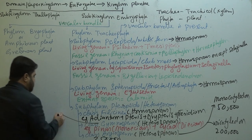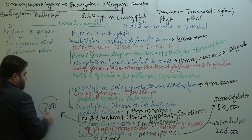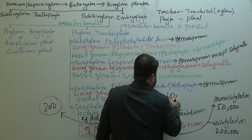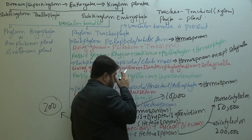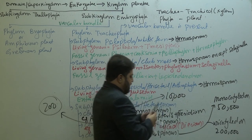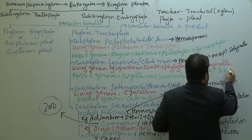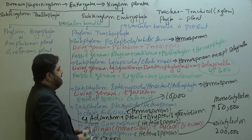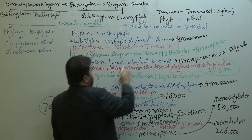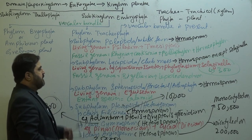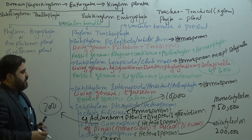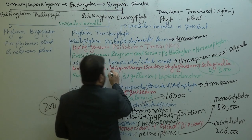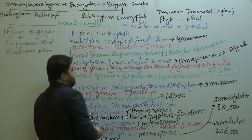Gymnosperms have about 700 species. Filicinia have about 10,000 reported species. Selaginella has around 300 species. Lycopodium lacks a ligule — the leaf-like structure that retains water — which is absent in Lycopodium.